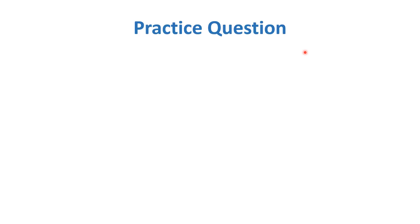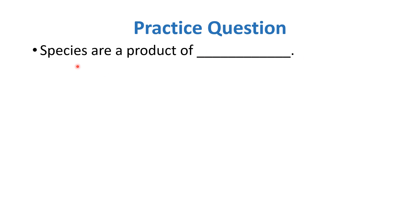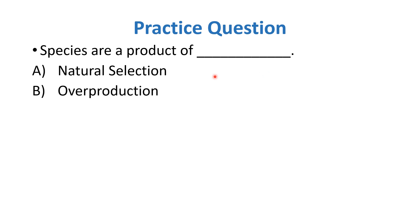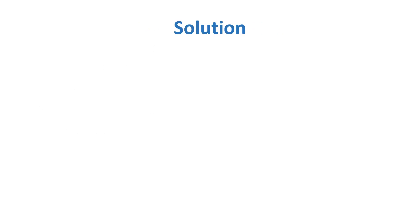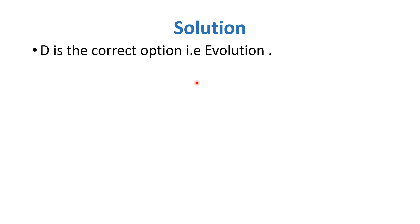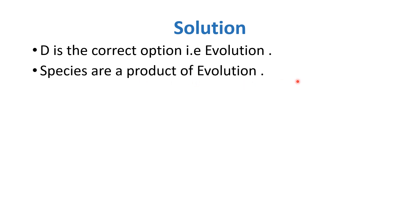It's time to discuss the practice question. The statement is: Species are a product of — Option A: Natural Selection, Option B: Overproduction, Option C: Intraspecific Competition, Option D: Evolution. The correct option is D — Evolution. Species are a product of evolution. I hope today's lecture was clear. Thank you very much.